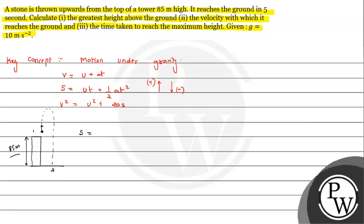Using the second equation of motion, s = ut + ½at². The displacement is in the downward direction, so it will be −85. That equals u × 5, minus g (which we take as negative), so: −85 = 5u − ½ × 10 × 5².